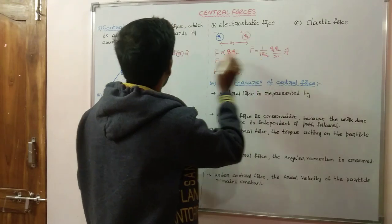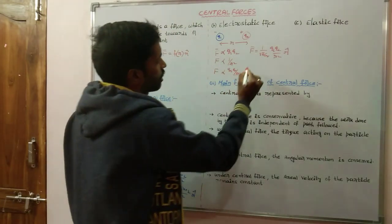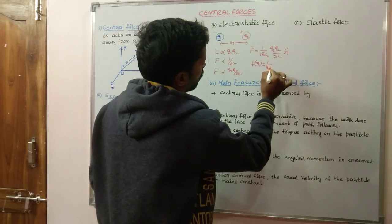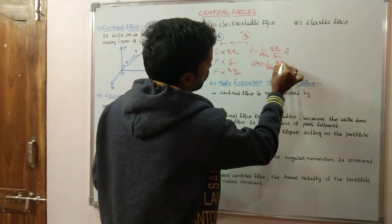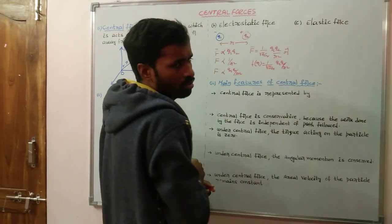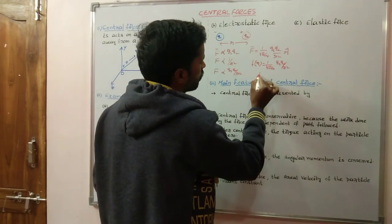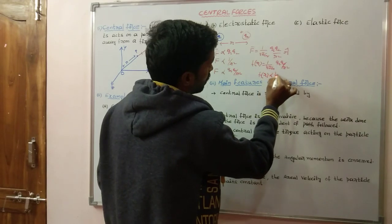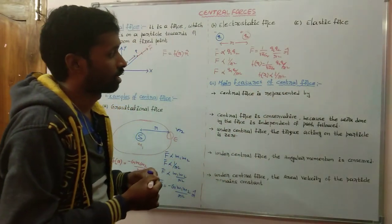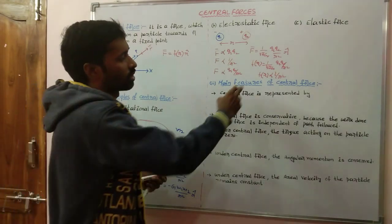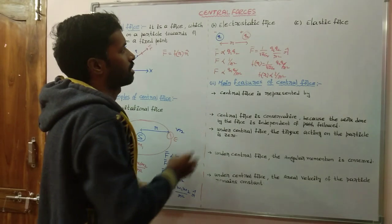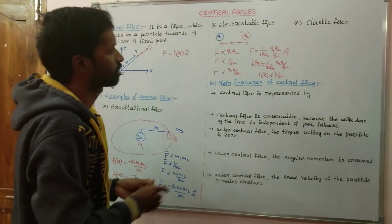Comparing with F bar = f(r)·r-cap, we get f(r) = (1 / 4πε₀) · q1·q2 / r². Here 1/4πε₀ is constant, q1 and q2 are constants, so f(r) is directly proportional to 1/r². Again, the central force magnitude depends only on the function of r. This confirms that electrostatic force is also one of the best examples of central force.